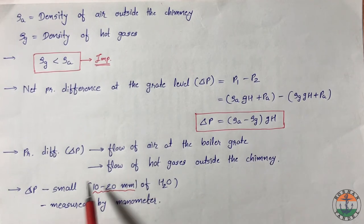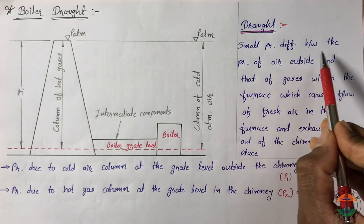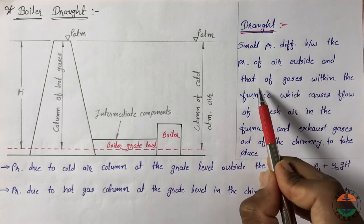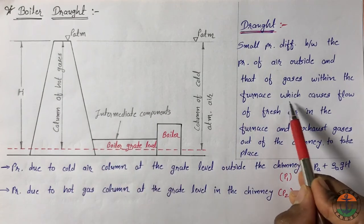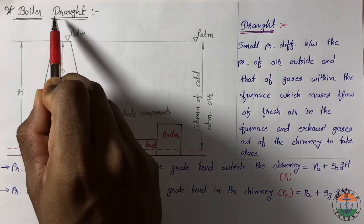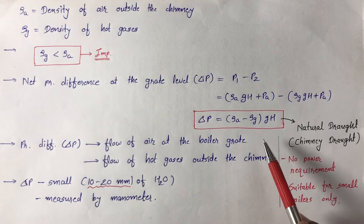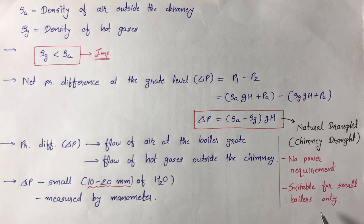Its value is very small and it is measured with the help of a manometer. Draft is defined as a small pressure difference between pressure of air outside and that of hot gases within the furnace or chimney portion, which causes flow of fresh air into the furnace and exhaust gases out of the chimney. This natural or chimney draft requires no extra power and is used only in small capacity boilers; it is not suitable for large power plants.